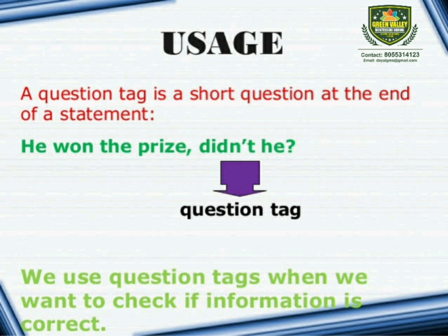Now the uses. As we know, a question tag is a short question at the end of a statement. For example, 'He won the prize, didn't he?' — here, 'didn't he' is the question tag. We use question tags when we want to check if information is correct or not.